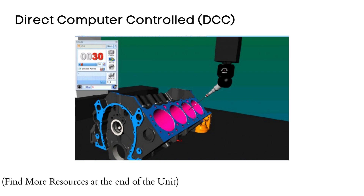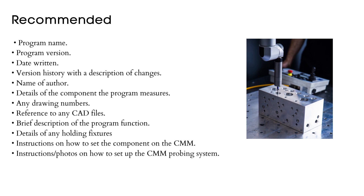In such a system, the user defines the geometric feature by keying in its nominal geometric information or by indicating the feature on a CAD model. To obtain the most efficient use of the DCC CMM, particularly in high-volume production situations, use the CMM for part inspections as much as possible.